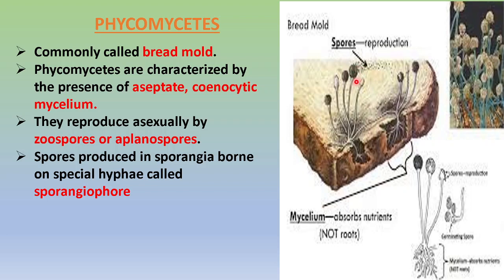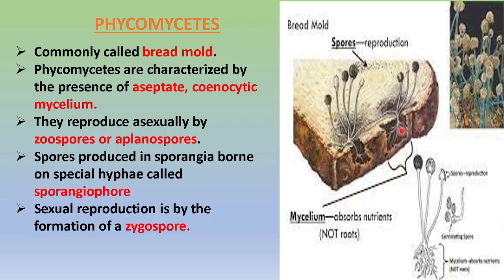The sporangia are borne upon special hyphae called sporangiophores. Initially the mold grows upon the substratum, then when it is time to reproduce, a few hyphae stand erect — the sporangiophores — which produce the sporangia, the globular structures inside which numerous spores develop. Once shed off, they fall upon another substratum and start growing. These mycelium absorb nutrition; they are not roots.